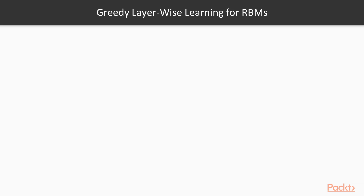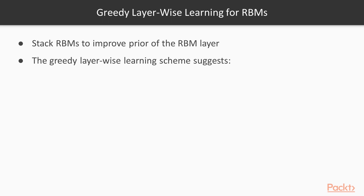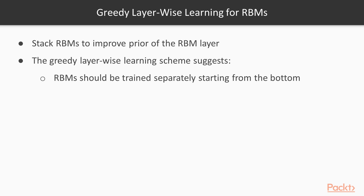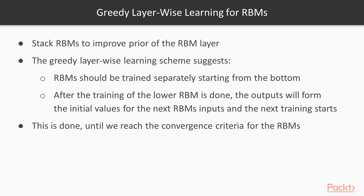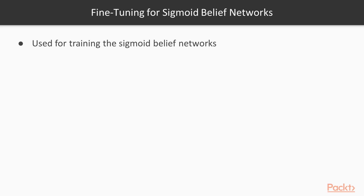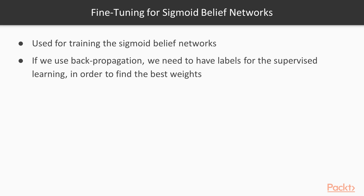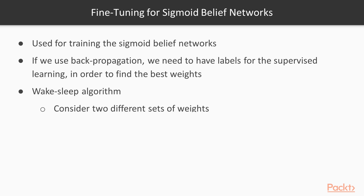Here we briefly explain greedy layer-wise learning for RBMs. Stacking RBMs helps improve the prior of the RBM layer. The greedy layer-wise learning scheme suggests that each RBM should be trained separately starting from the bottom. After the training of the lower RBM is done, the outputs form the initial values for the next RBM's inputs, and the next training starts. This procedure continues until convergence criteria for the RBMs are reached. Fine-tuning is used for training the sigmoid belief networks. If we use backpropagation, we need labeled data for supervised learning. Since we want to work with unlabeled data using unsupervised learning, we need to apply the wake-sleep algorithm. In the wake-sleep algorithm, two different sets of weights are considered.